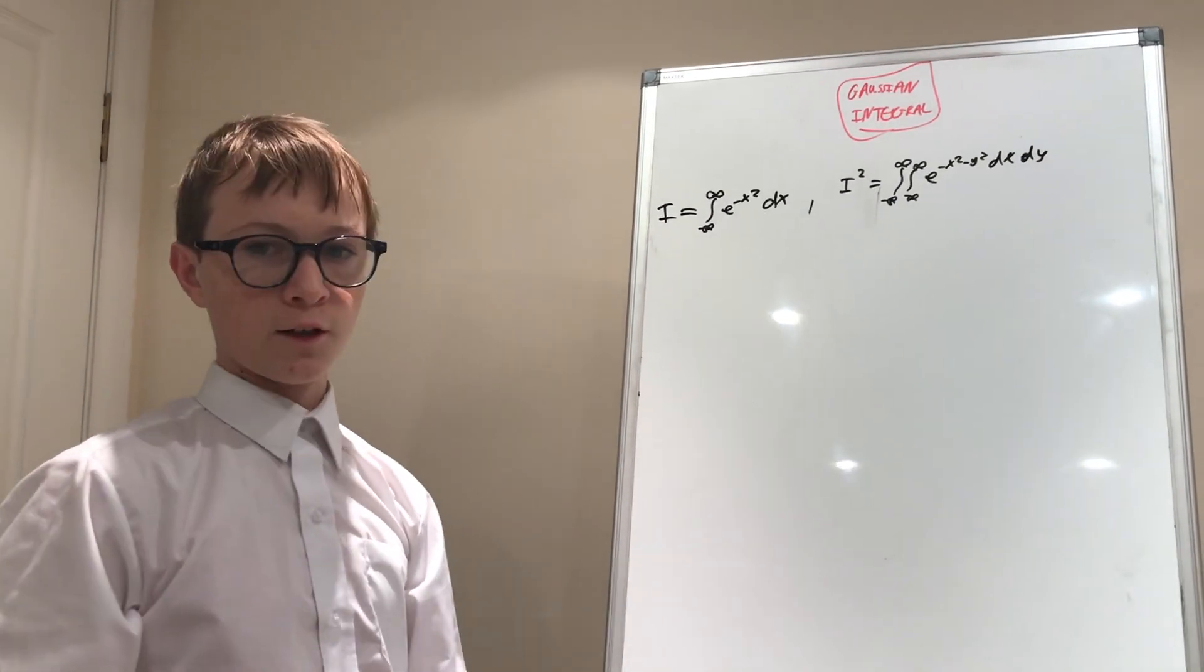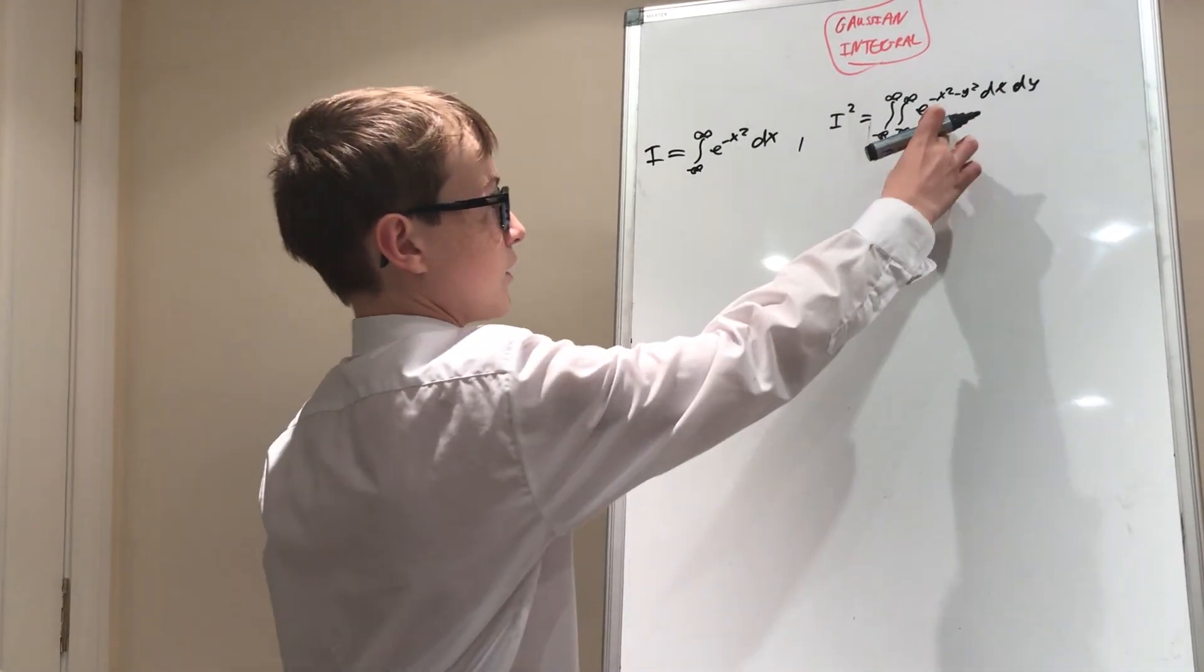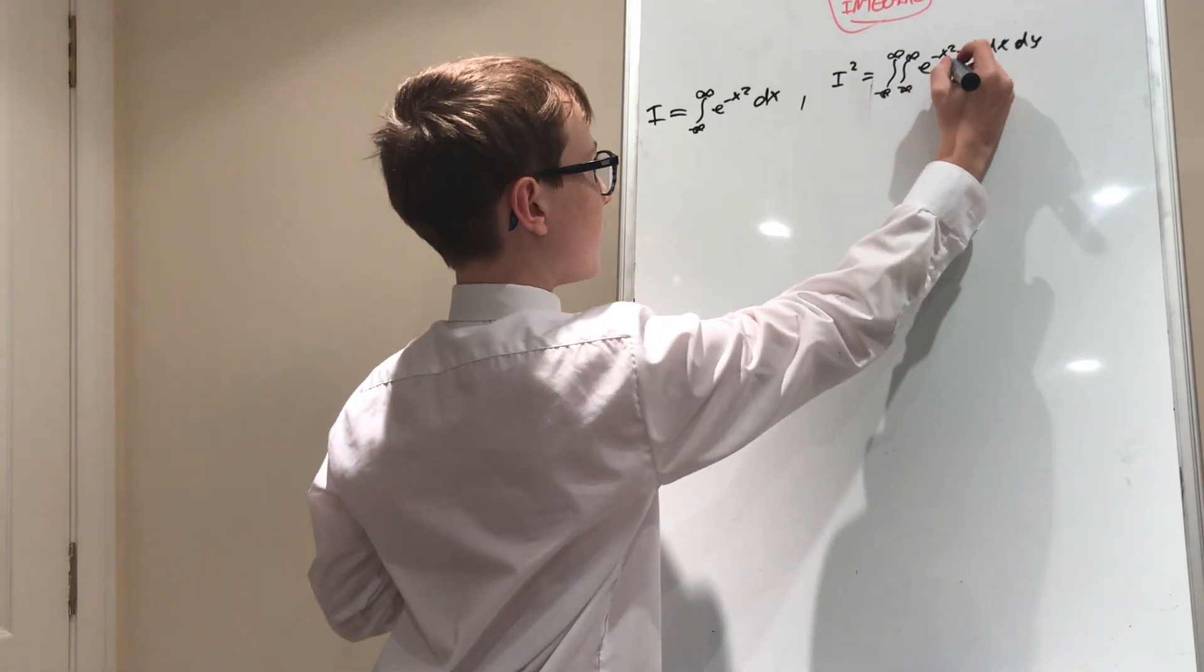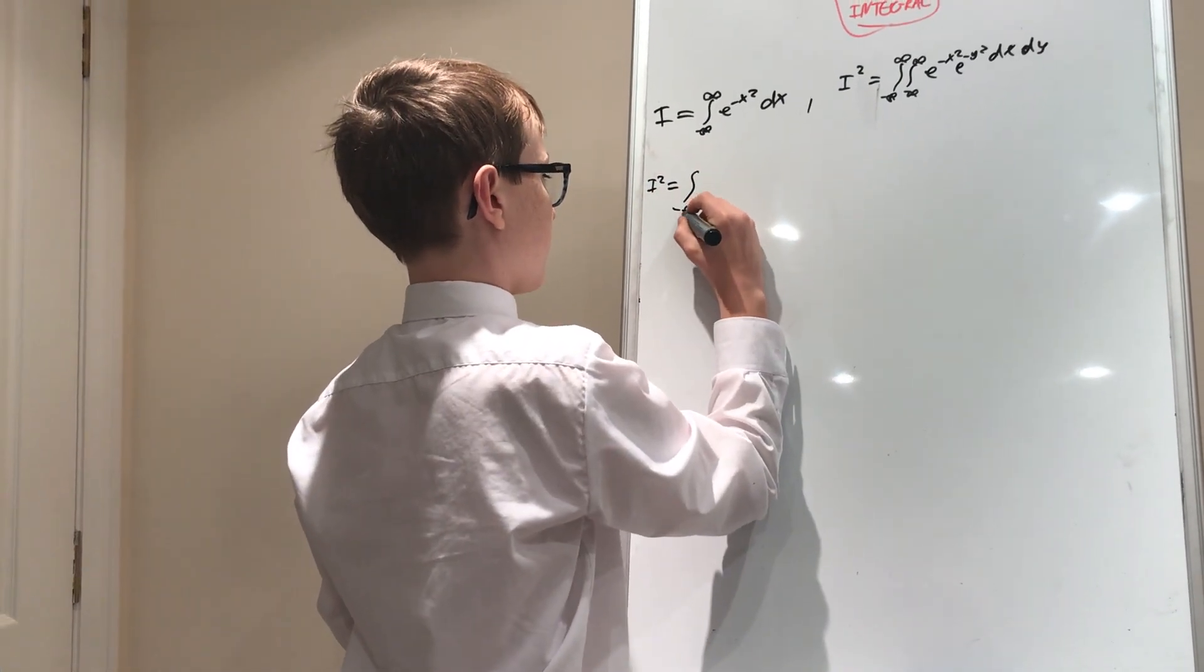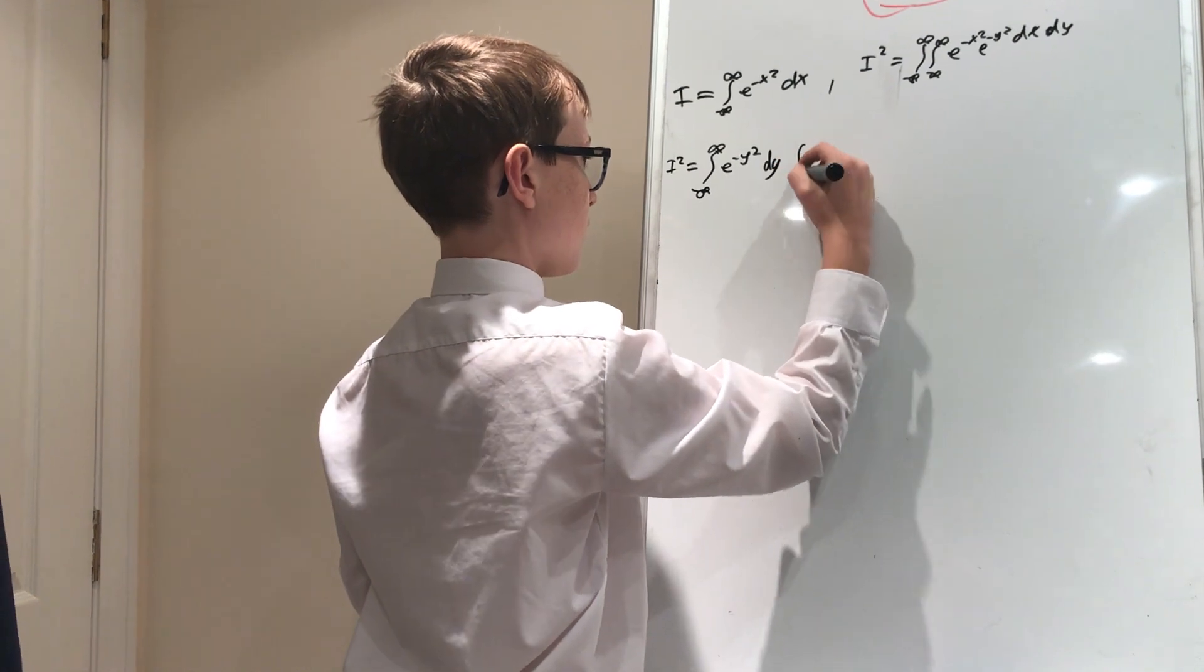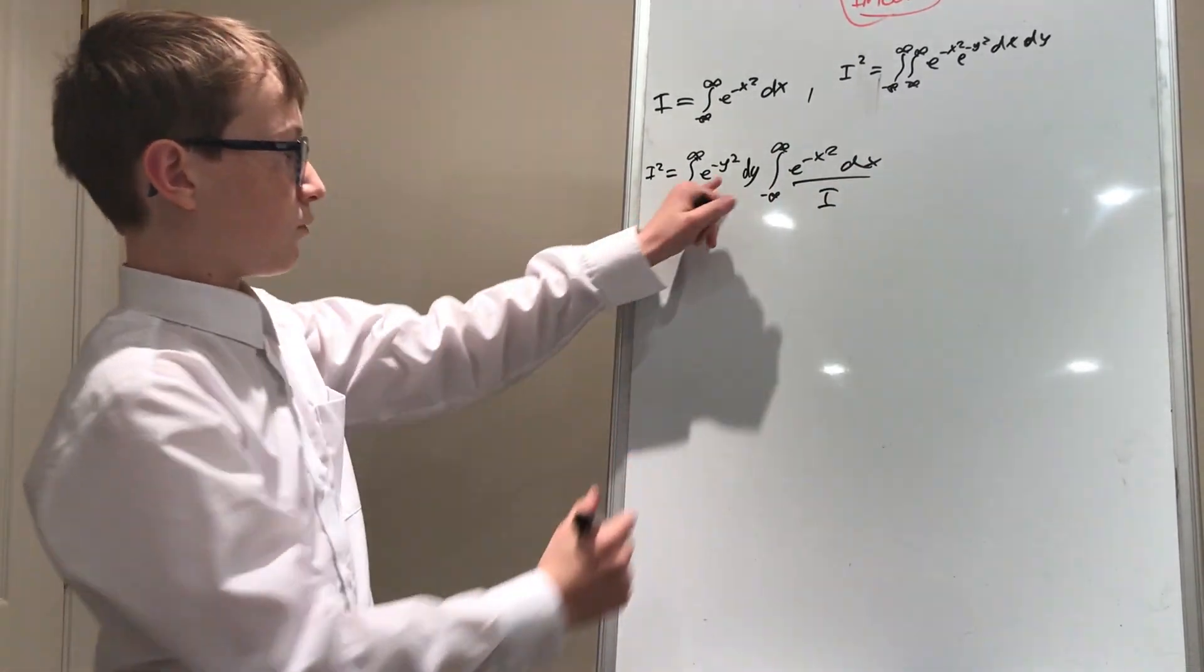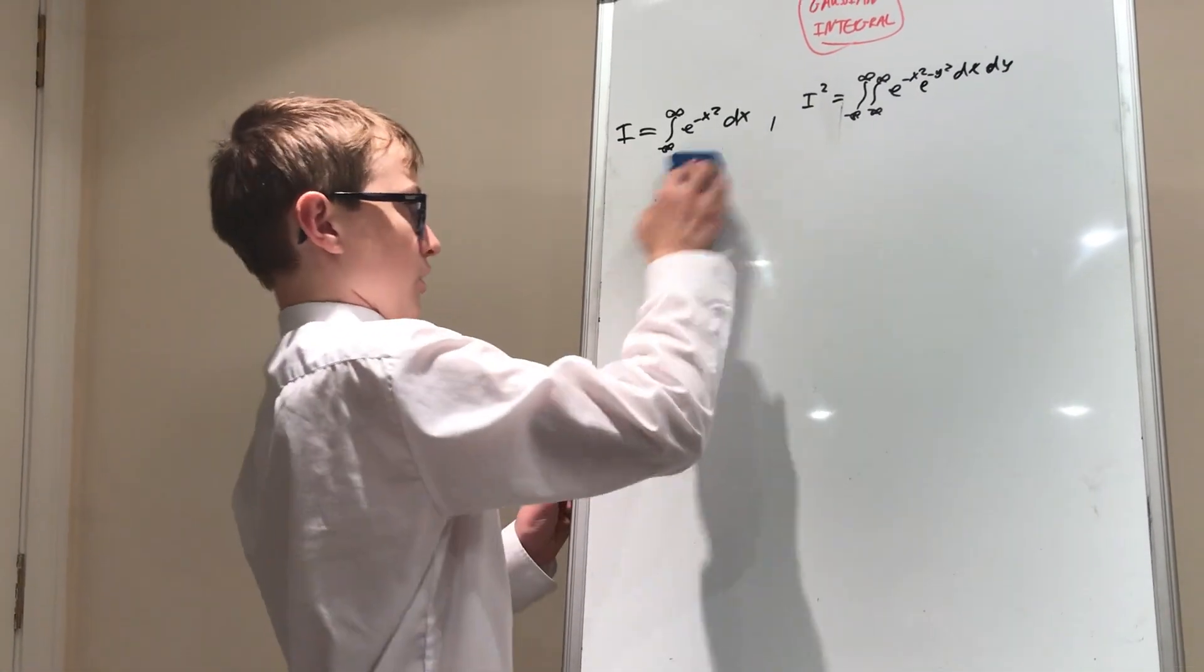And just to show you that this is definitely i squared, we can write this out in a more clear way. This was actually e to the negative x squared times e to the negative y squared, but because the base was the same, we could combine the powers. So this i squared equals the integral of e to the negative y squared times the integral of e to the negative x squared dx dy. And now we can definitely see for sure that this is i squared because this part is i according to our question, and it doesn't matter if it's x or y, this part is also going to be i. So that's just justification that this is actually i squared.